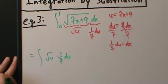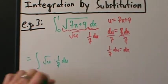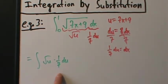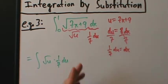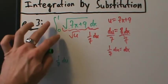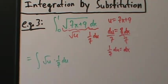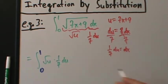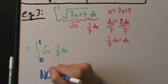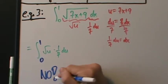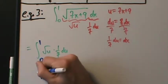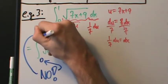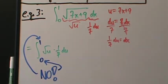Now we want to be very careful here: when we do integration by substitution with definite integrals, we need to be careful about the limits. If we just write the integral from 0 to 1, that's wrong — we don't want to do that.